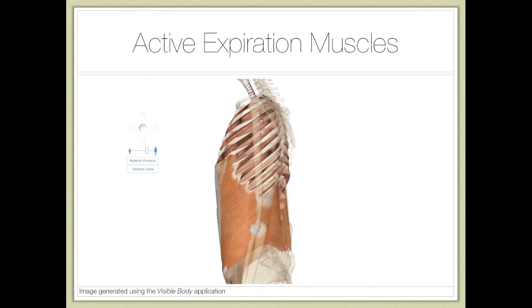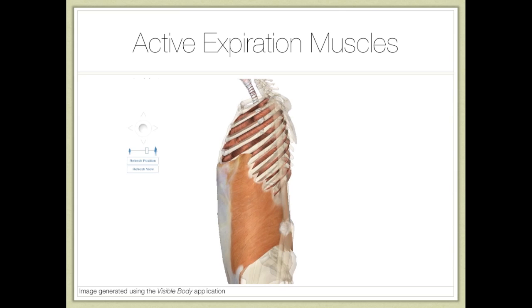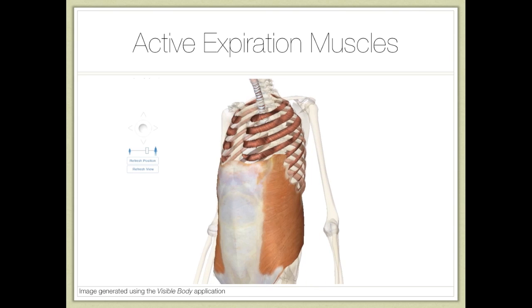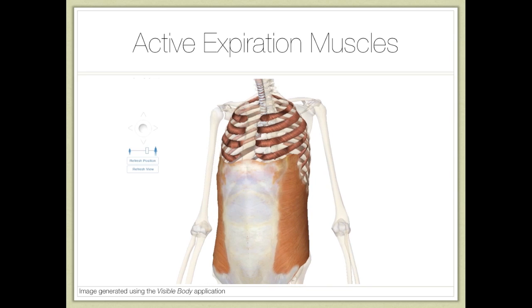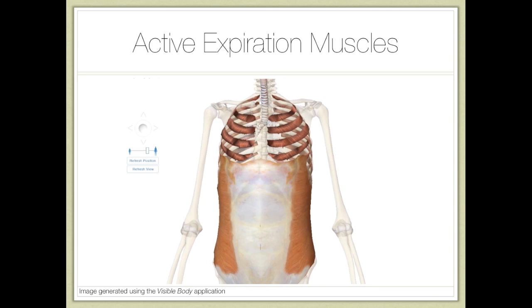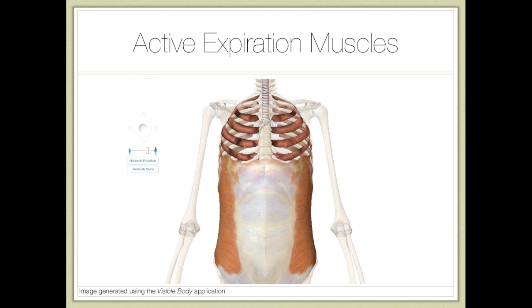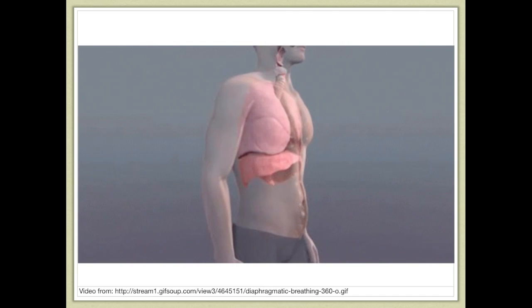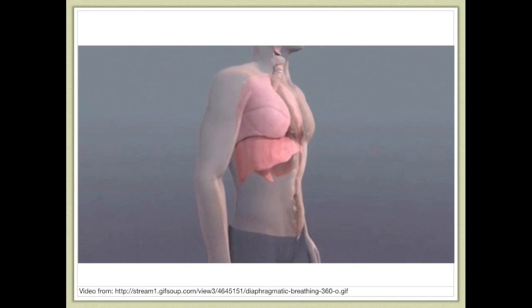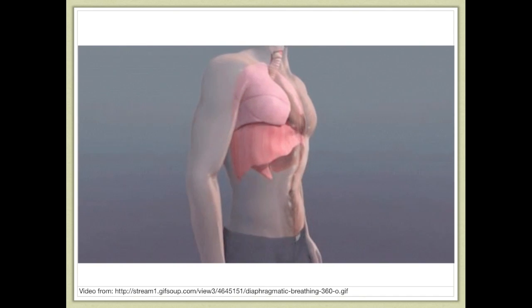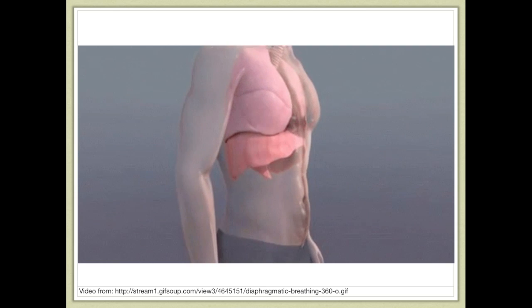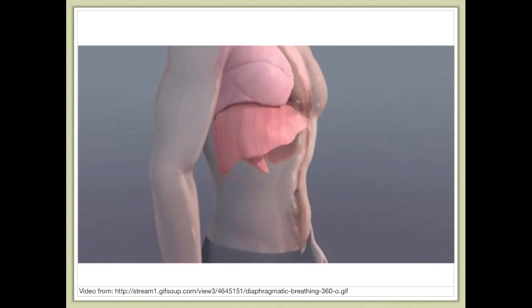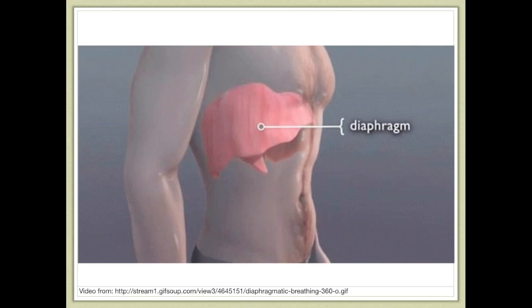For active expiration, think about blowing out a candle. You have three main muscles in this process: the abdominal muscles, the diaphragm, and the internal intercostal muscles. The abdominal muscles contract while the diaphragm relaxes, forcing the lungs to decrease in volume. The internal intercostal muscles also contract to force more pressure on the lungs to release air.